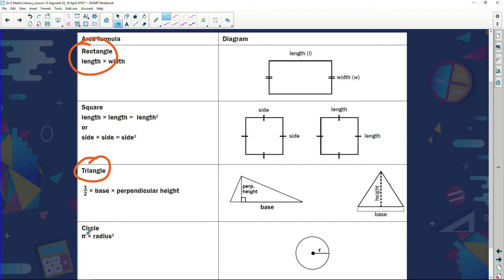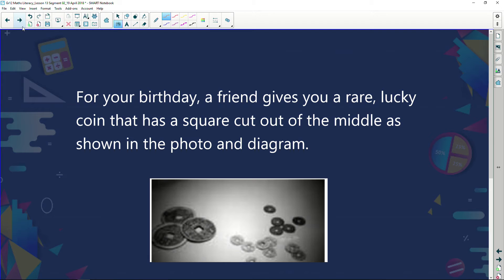Triangle we said was half times base times perpendicular height. In other words, the height that's at 90 degrees to the base. And then circle, we came up with a formula where we said to calculate the area of a circle, it's pi times r squared. Right, let's go and look at some examples.